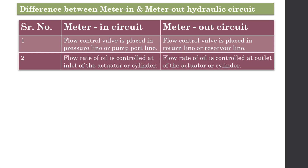The second difference is that in the meter-in circuit, the flow rate of oil is controlled at the inlet of the actuator or double acting cylinder. In the meter-out circuit, the flow rate of oil is controlled at the outlet of the actuator or cylinder.